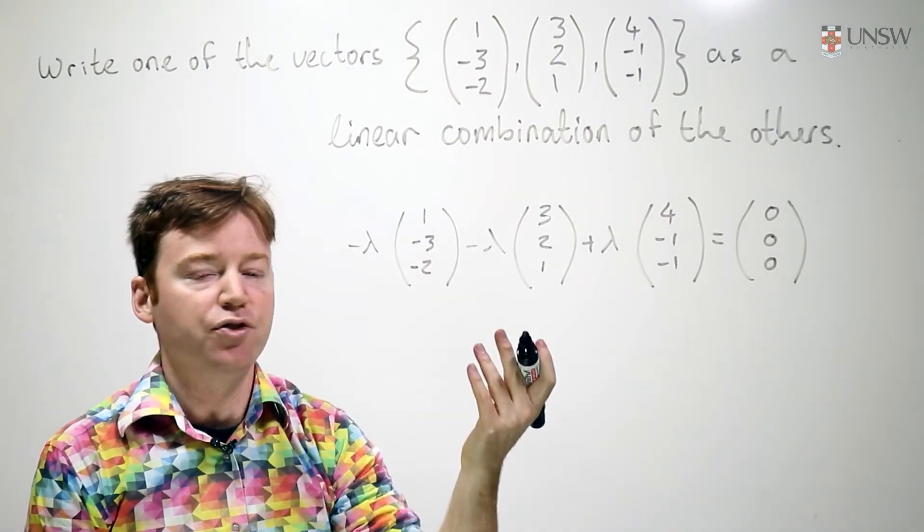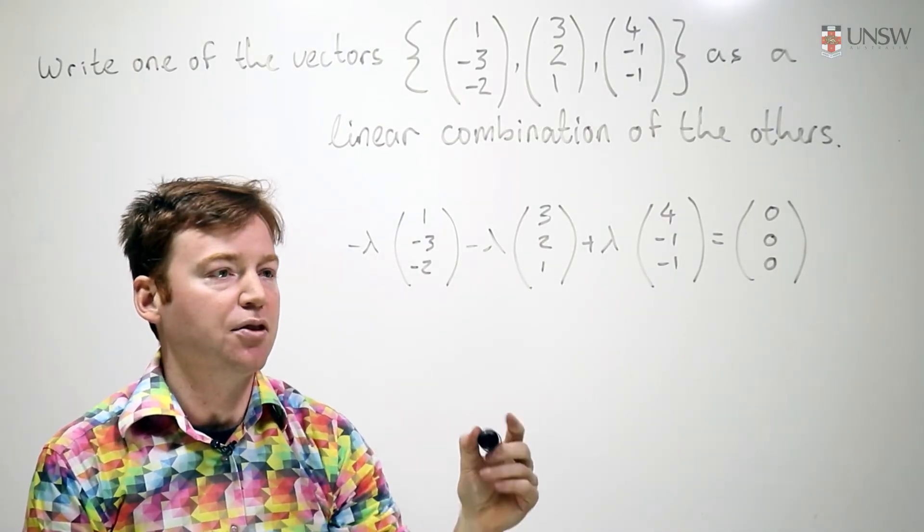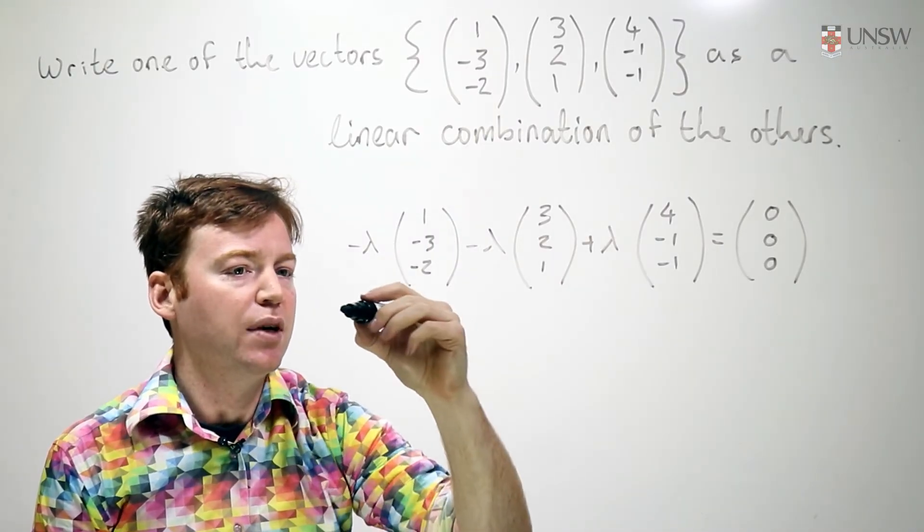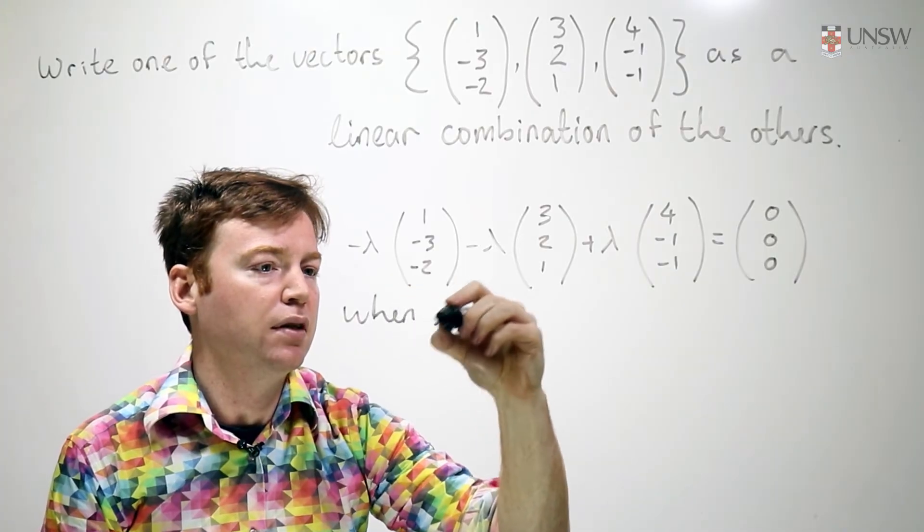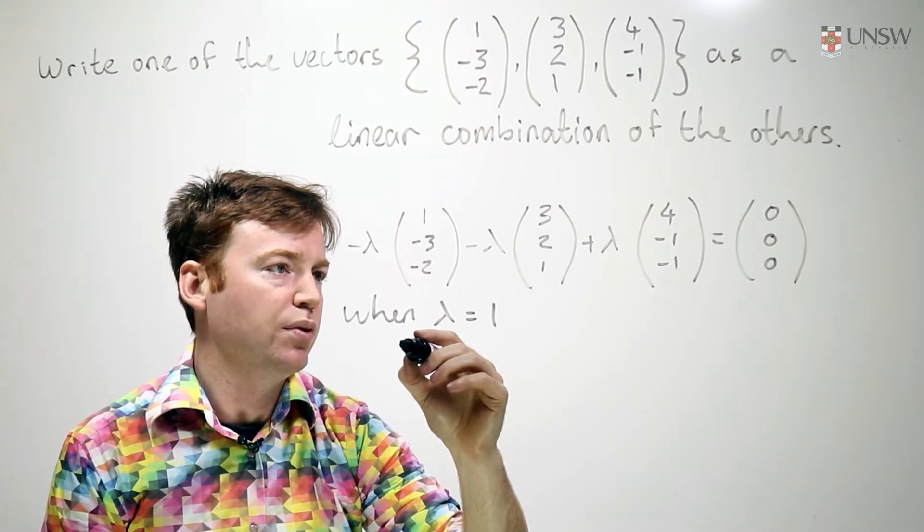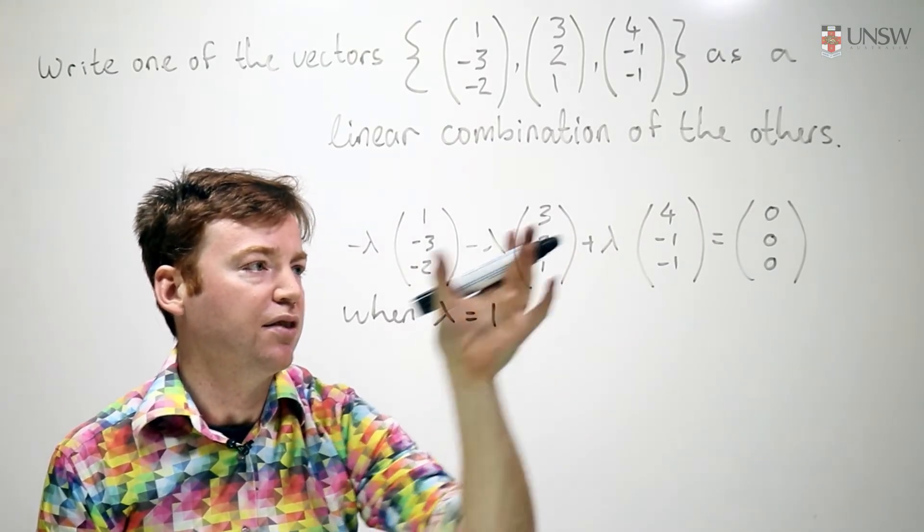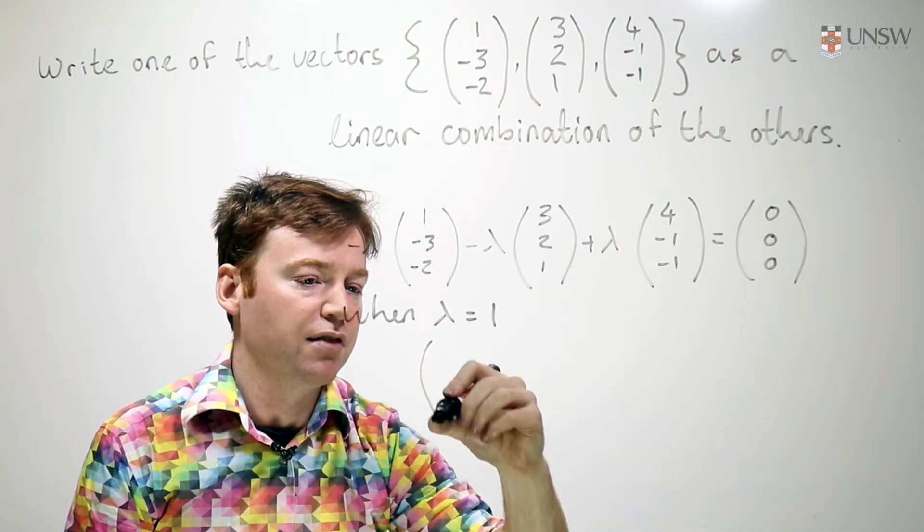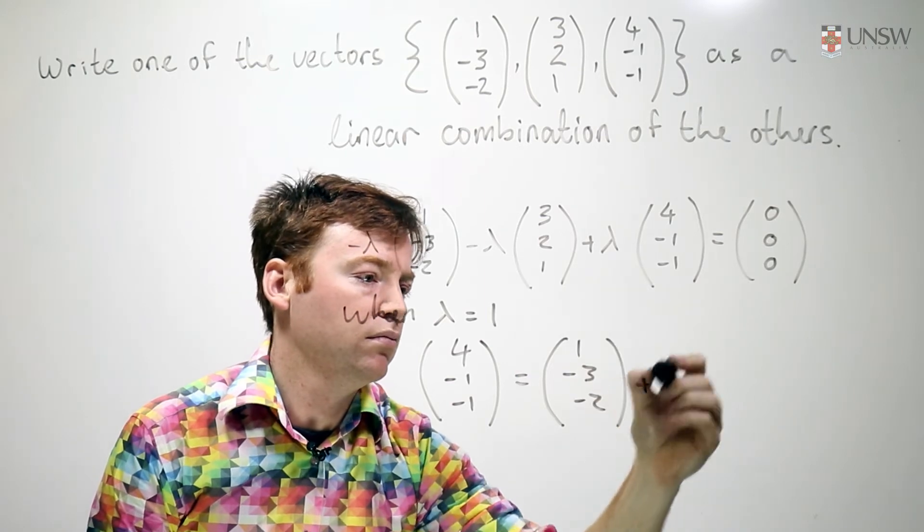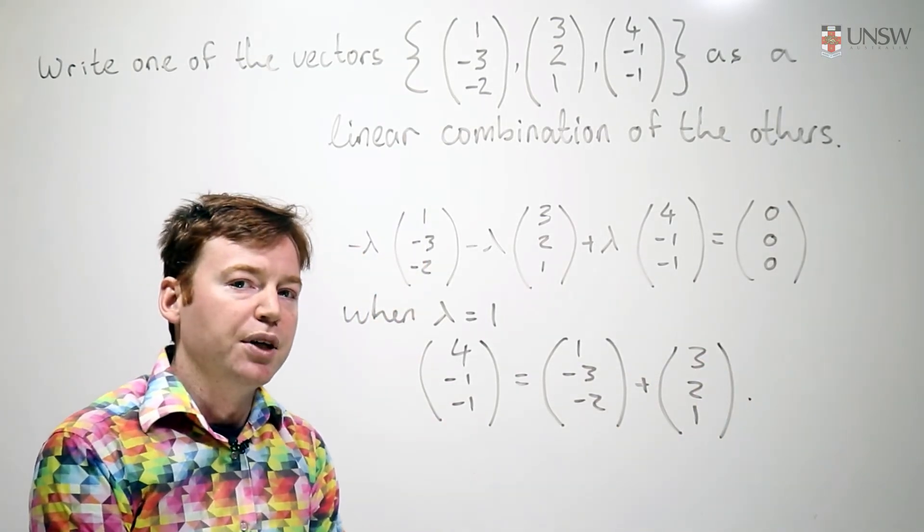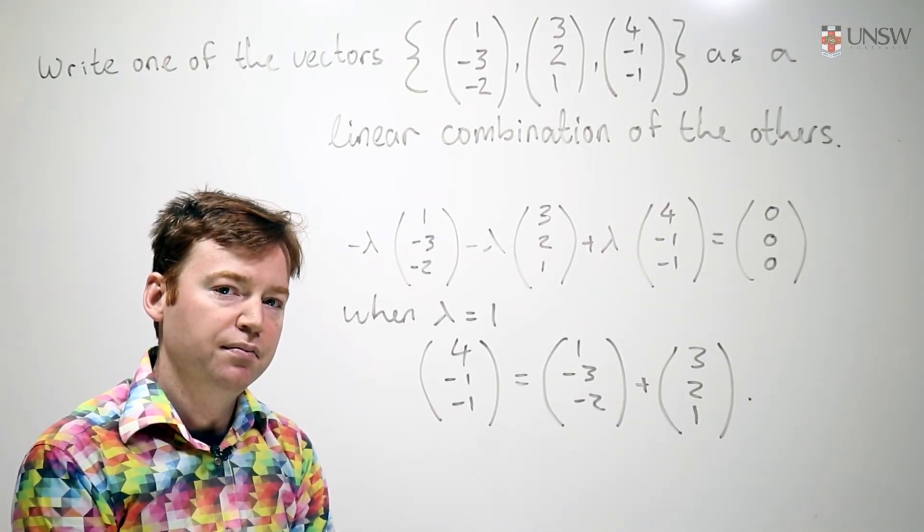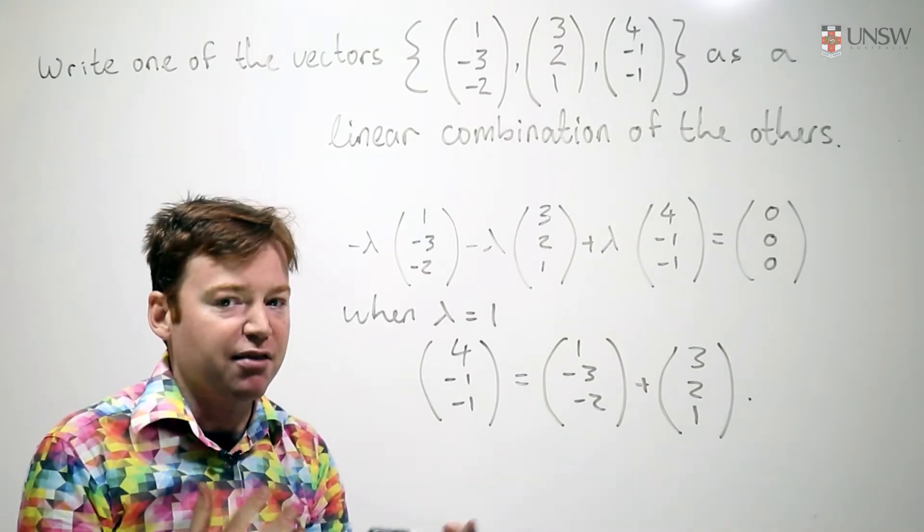Now I need just a little bit more space. And now I can rearrange this to express one vector as a linear combination of the others. This will hold for all lambdas. But in particular, when lambda equals 1, then this is equal to, well, I might do two things here. I might set lambda equal to 1 and I'll take those two over to the other side. I can rewrite this as 4, negative 1, negative 1.